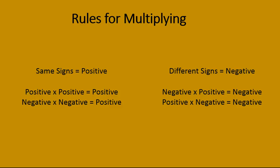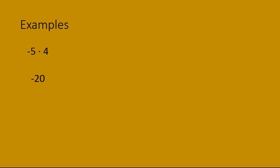If that analogy helps you remember, great. If not, just remember these rules. Let me show you a couple of examples. If you have negative 5 times positive 4, the signs are different, so you're going to have a negative result. A negative times a negative gives you a positive — that will always be the case. Positive times a positive gives you a positive. And in our final example, a positive times a negative gives you a negative answer.